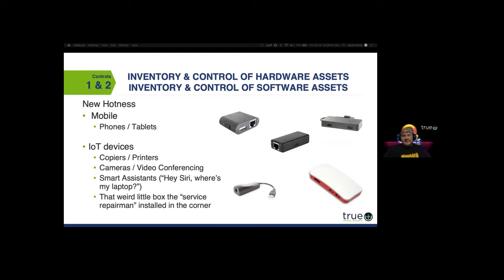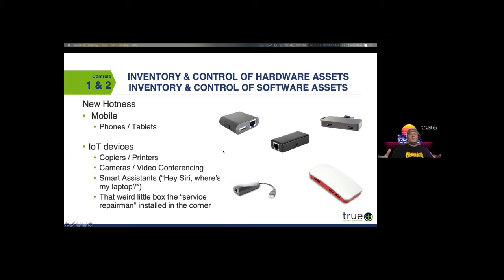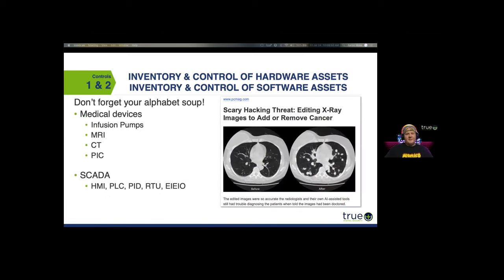How many IoT devices do you actually have on your network? Copiers and printers are IoT devices. Maybe cameras and video conferencing equipment. What about smart assistants — Alexa, Google Home, Apple devices? What about that weird little box in the corner that the service repairman installed? If you see something like that, unplug it and see if somebody screams. Don't forget your alphabet soup for specialized organizations — medical devices like infusion pumps, MRIs, CT scanners, and on the other side, energy sector devices like SCADA, HMI, PLC, PID, RTU.